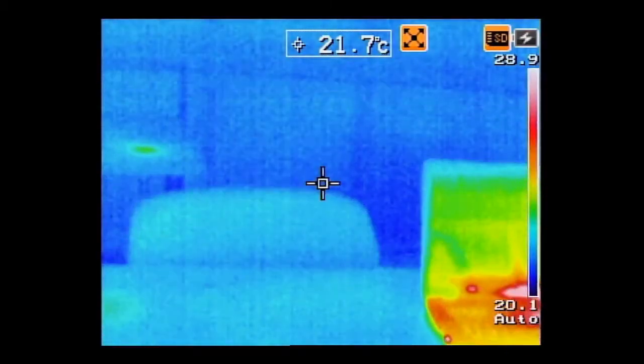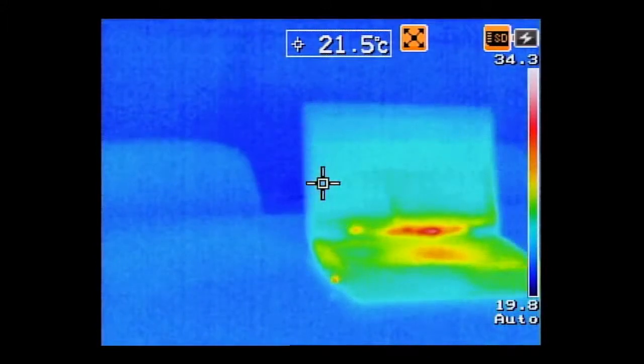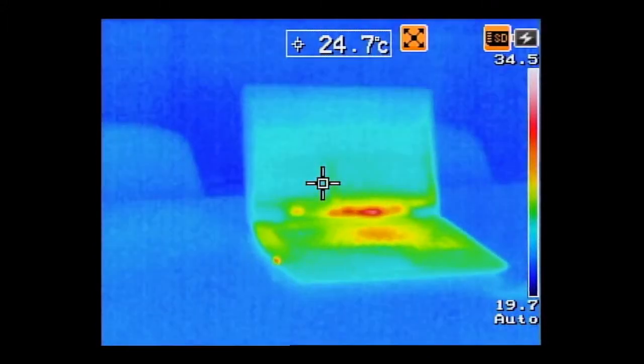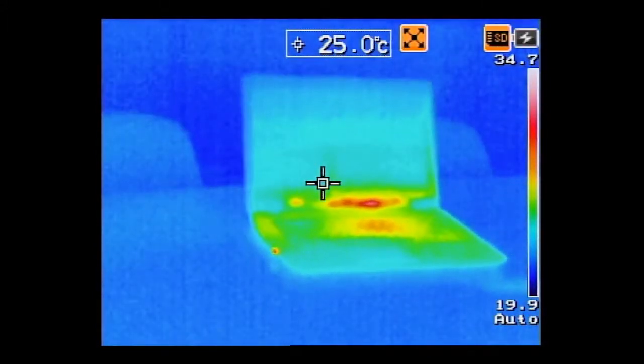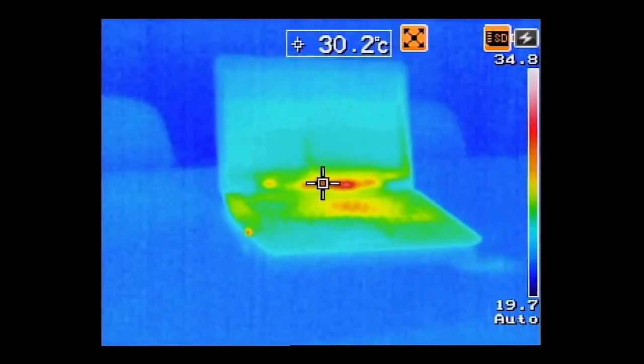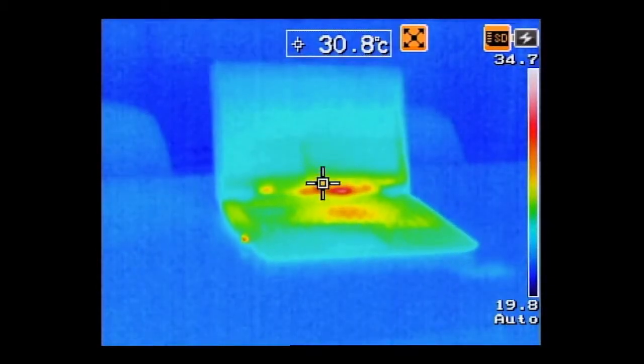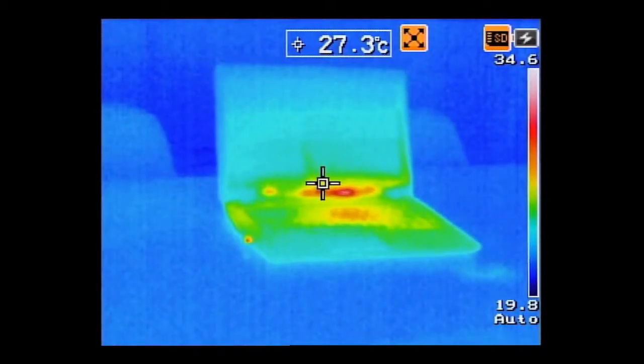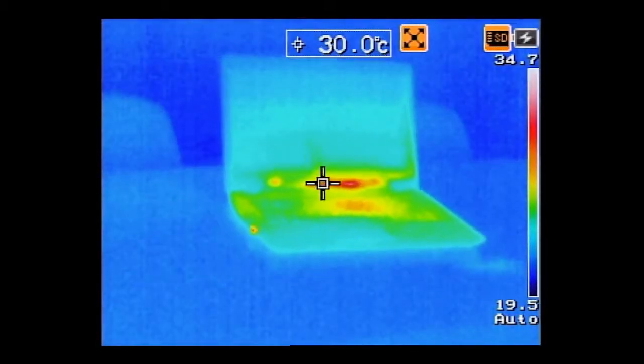So as the camera auto ranges I'm going to scroll around to see a few different things. Here I have my laptop and you can see the red portions are a little hotter. My laptop seems to be hot in the middle and I think that's about 30 degrees or so at the center.